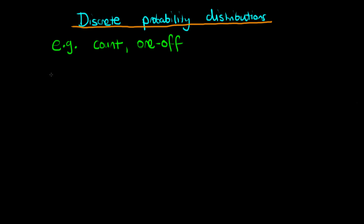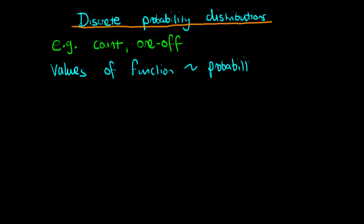So what do we actually mean by a discrete probability distribution? Well, this is some sort of mathematical function where the values of that function correspond, in the case of discrete distributions, to probabilities. Note that this is different to the case of continuous random variables, where we cannot associate a probability with a particular value — instead, what we associate is what's known as a probability density.